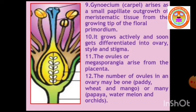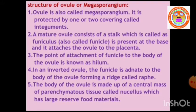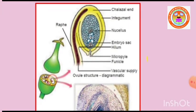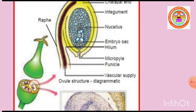Let us continue with the structure of ovule or Megasporangium. 'Mega' means large, and Megasporangium is a large gamete or large cell-producing structure. Microspores are produced within the anther cavity, whereas Megaspores are produced within the ovary cavity. The ovule is called Megasporangium, and each Megasporangium is protected by integuments.